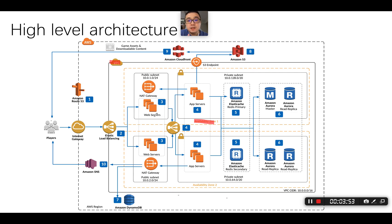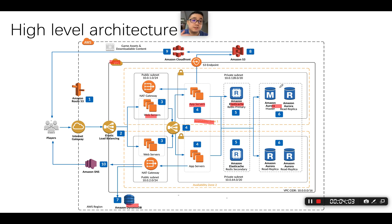So you're going to have the web tiers, the app tiers, the caching tiers, and also the DB tiers. In terms of the DB tiers, you can use SQL — for example, Aurora — together with multiple replicas.